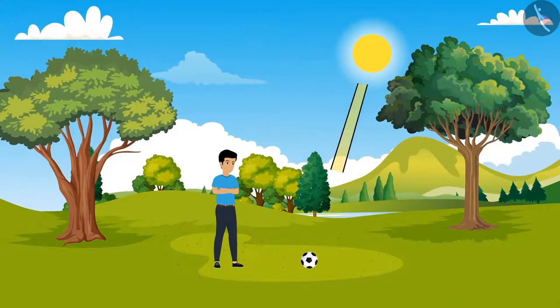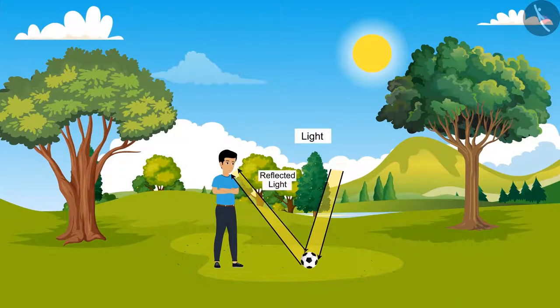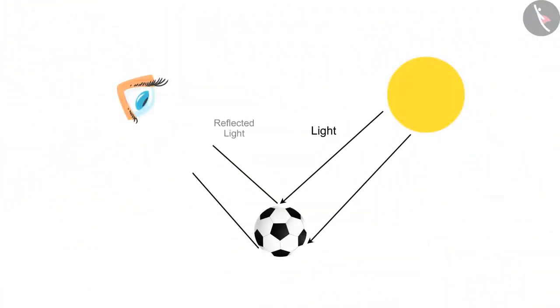During the daytime, light rays from the sun get reflected when they fall on objects. This reflected light rays on entering our eyes enable us to see these objects.